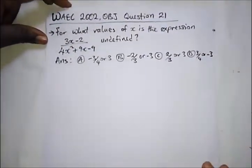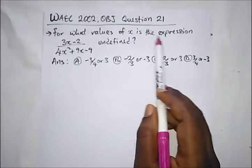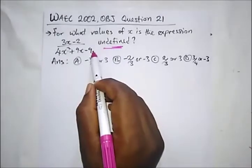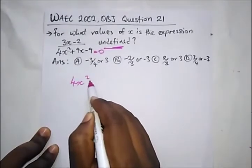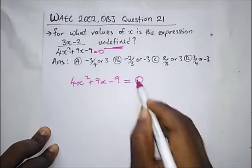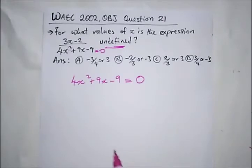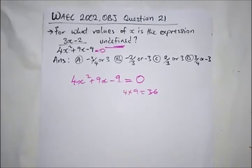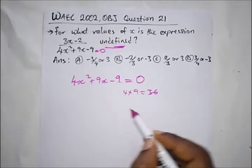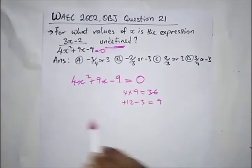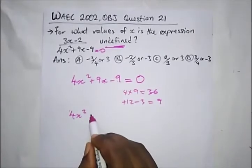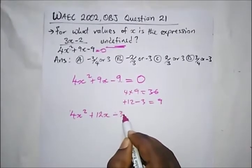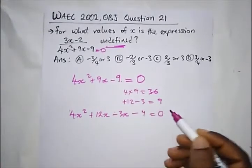Another question from WAEC 2002: find for what values of X is the expression undefined. 'Undefined' means the denominator equals zero, so we have 4X² plus 9X minus 9 equals zero. We multiply the coefficient of X² by the constant: 4 times 9 equals 36. We find factors of 36 that give us 9: that's 12 and minus 3. So we rewrite as 4X² plus 12X minus 3X minus 9 equals zero.